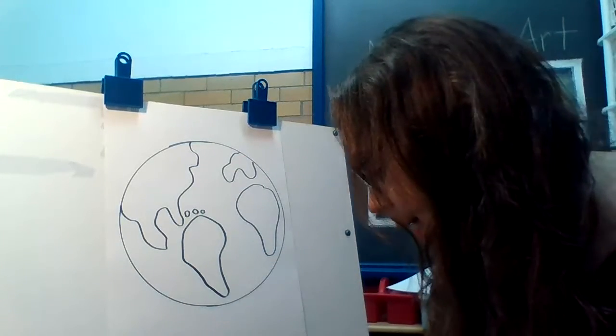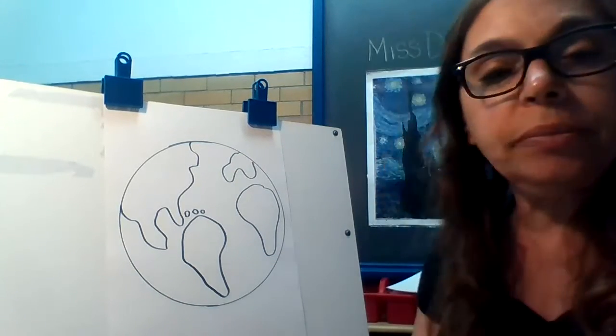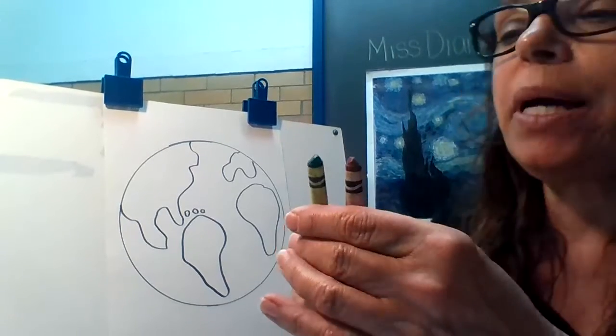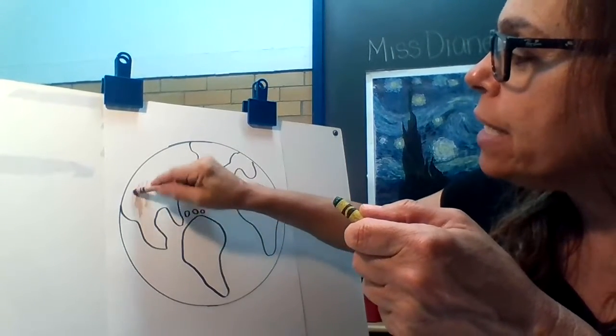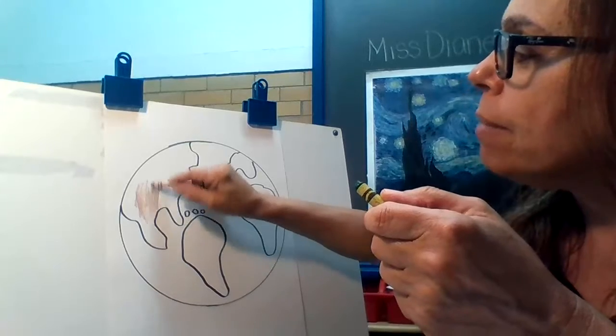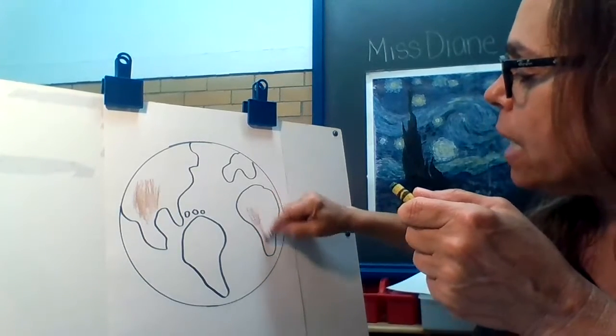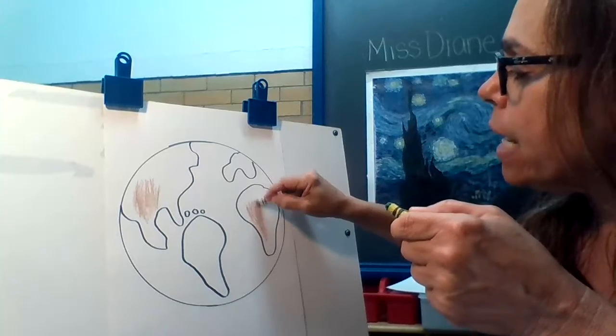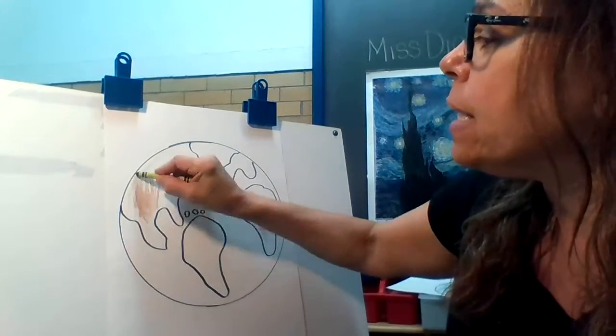The land is going to be green. You could put a little brown if you want. Over here in North America, all the way over here is a desert, so I'm going to put some brown there. In Africa, there's some desert, so I'm going to put some brown there.